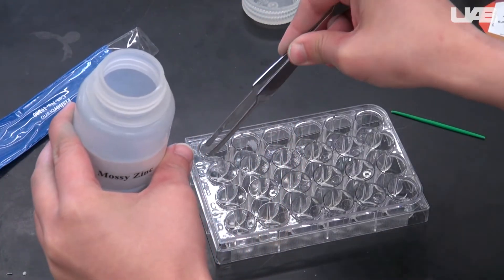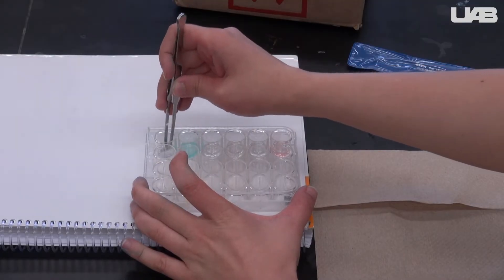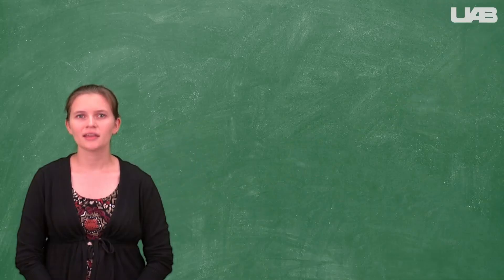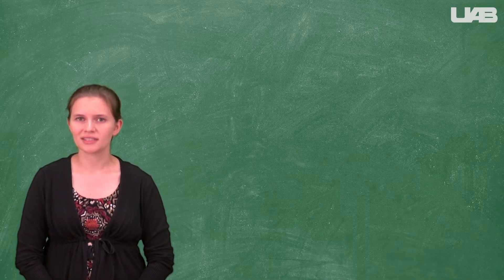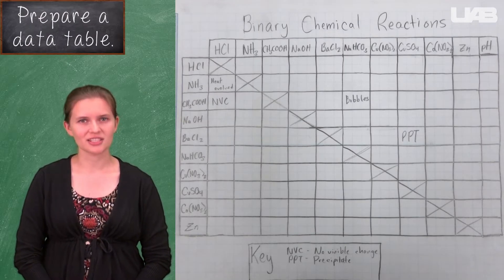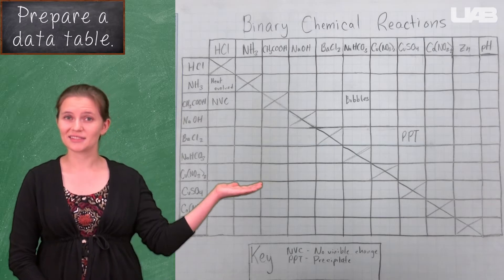Use the tweezers to place the zinc into the well and to remove the zinc from the well plate when you clean up. As you move through the experiments, keep track of your observations using a simple chart like this one.